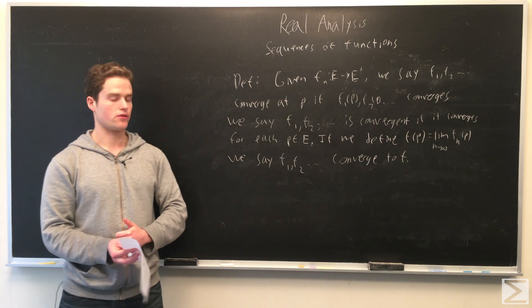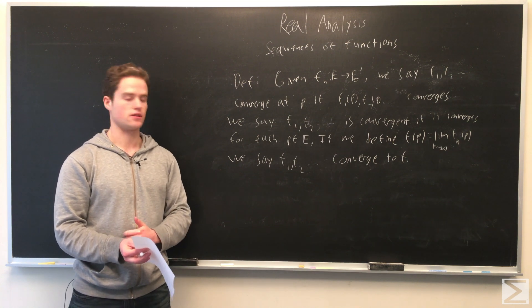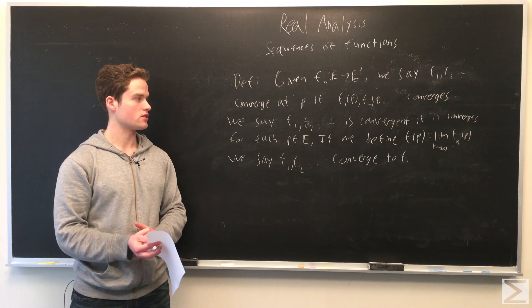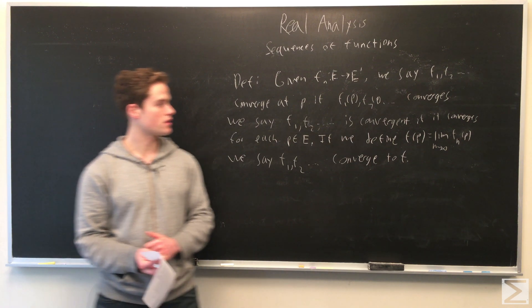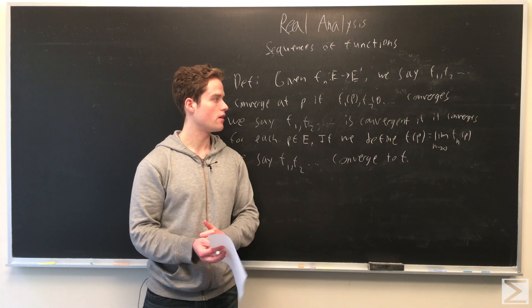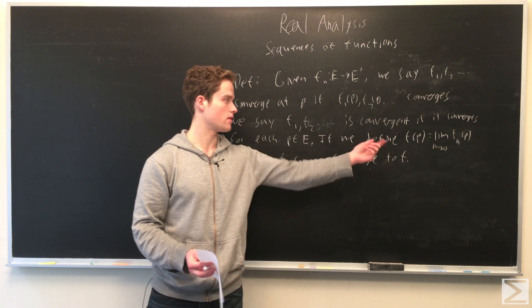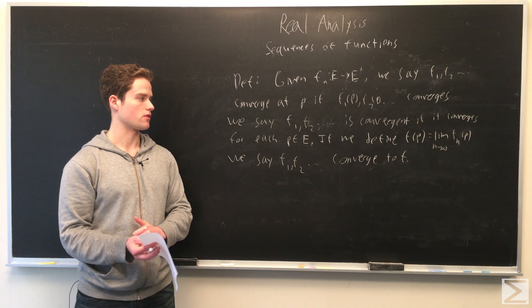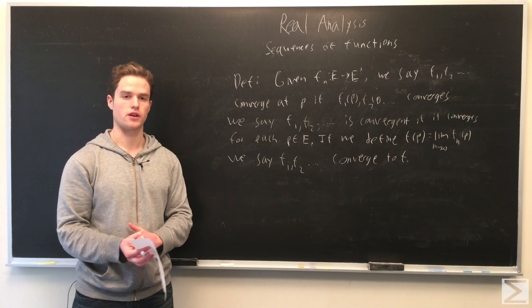We say f_1, f_2, etc. is convergent if it converges at each point in E. If we define a function f(p) equals the limit as n goes to infinity of f_n(p), assuming the limit converges, then we say f_1, f_2, etc. converges to the function f.